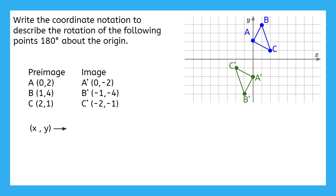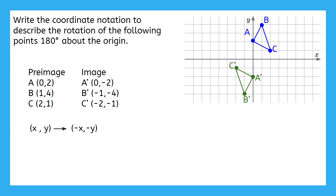The x values from the preimage stayed in the first coordinate of the image but changed signs. We can show that in our notation by writing negative x as the first value of the image coordinate. We can also see that the original y values stayed as the second coordinate in the images, but also changed signs. We can show this in our coordinate notation by writing negative y. And that's our final answer.